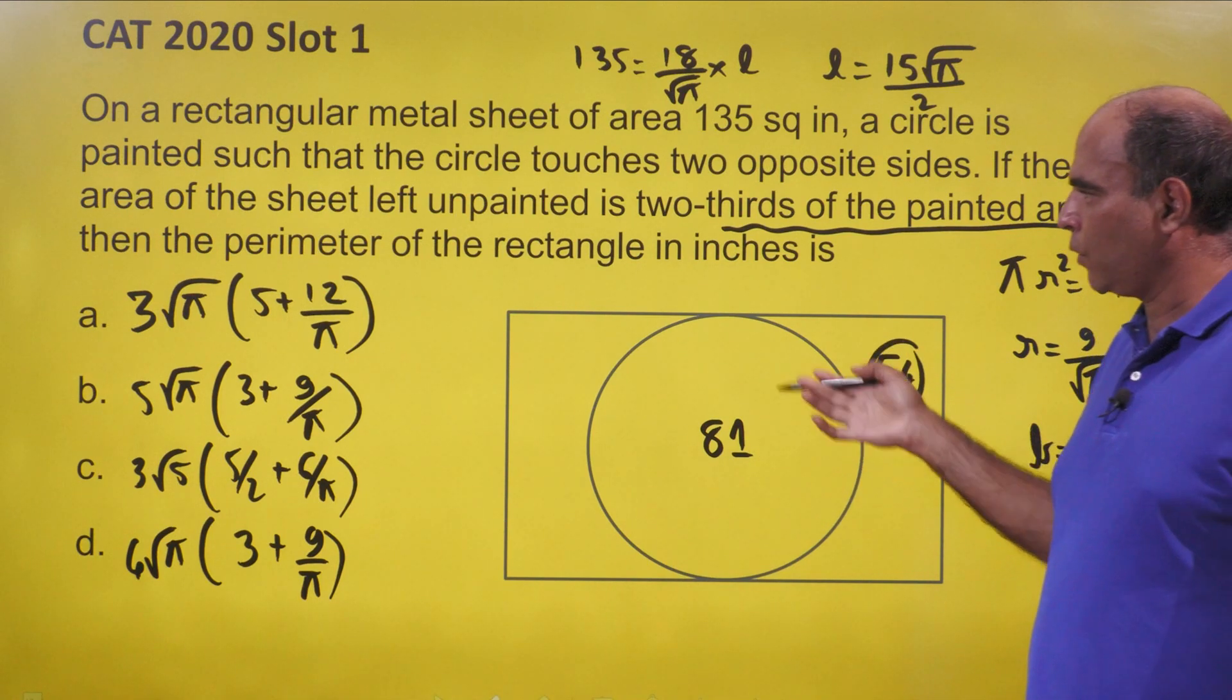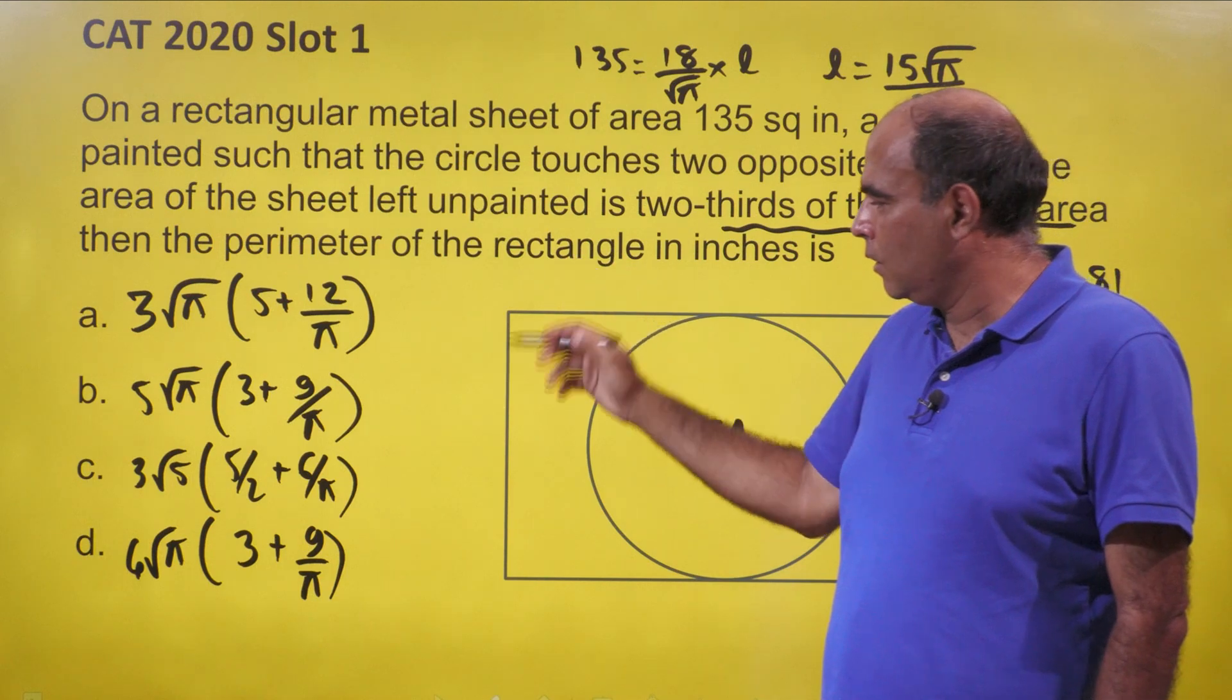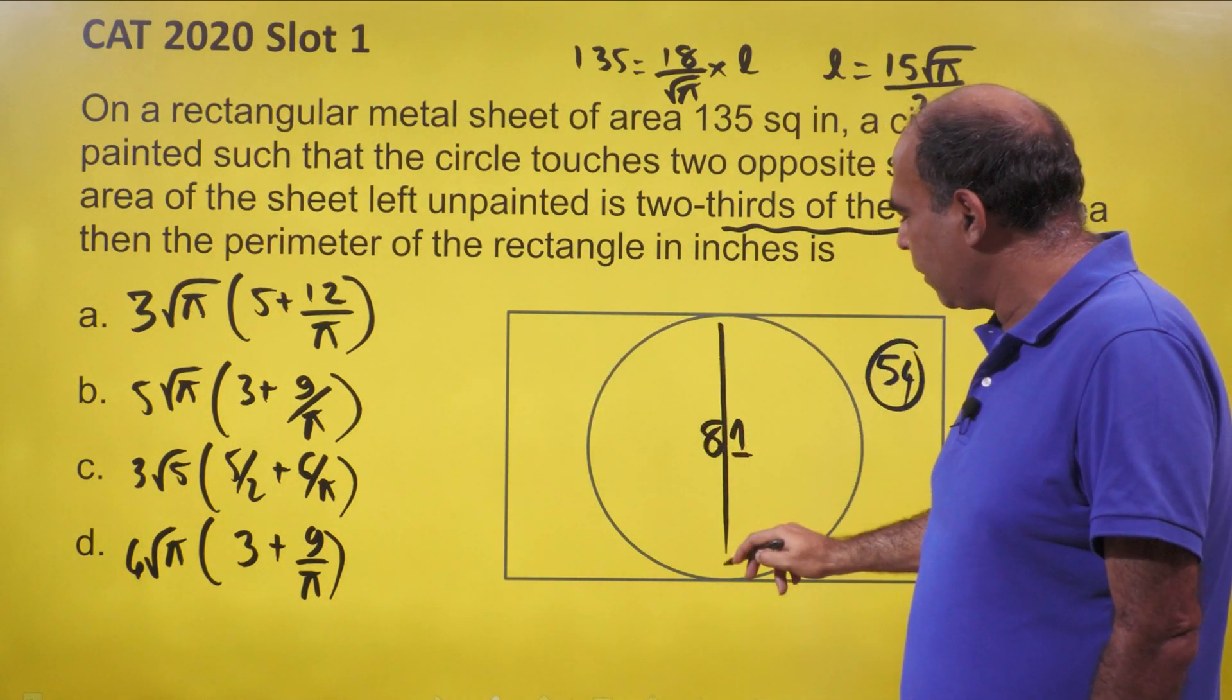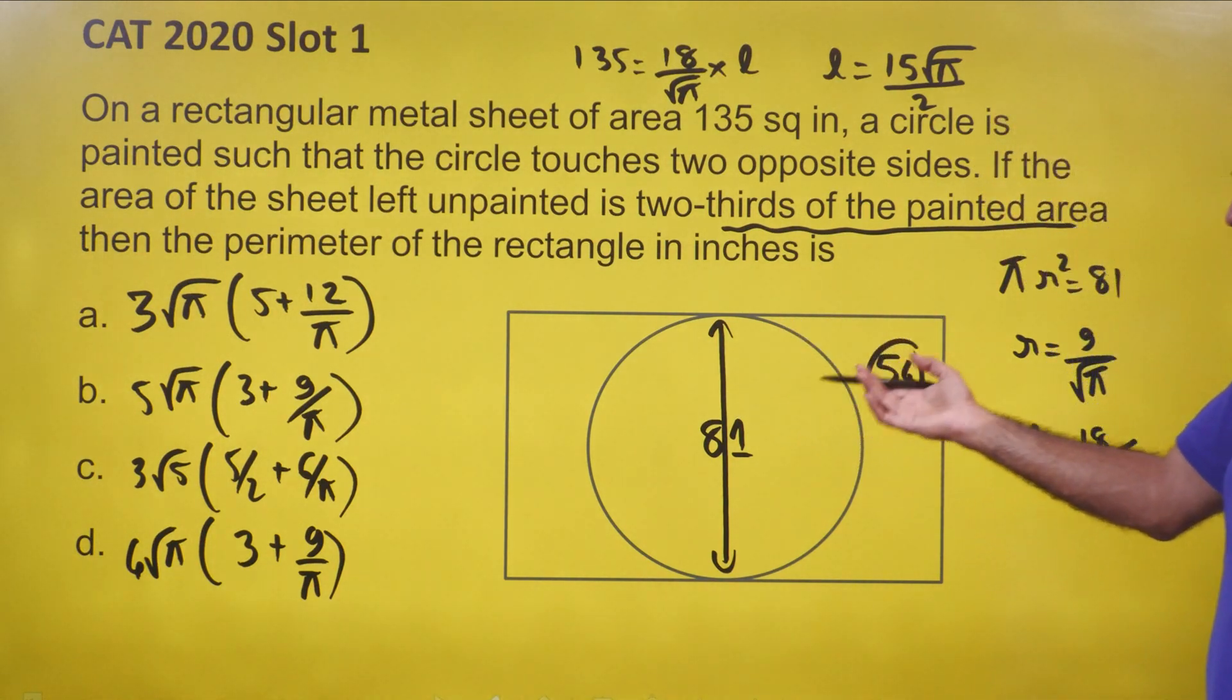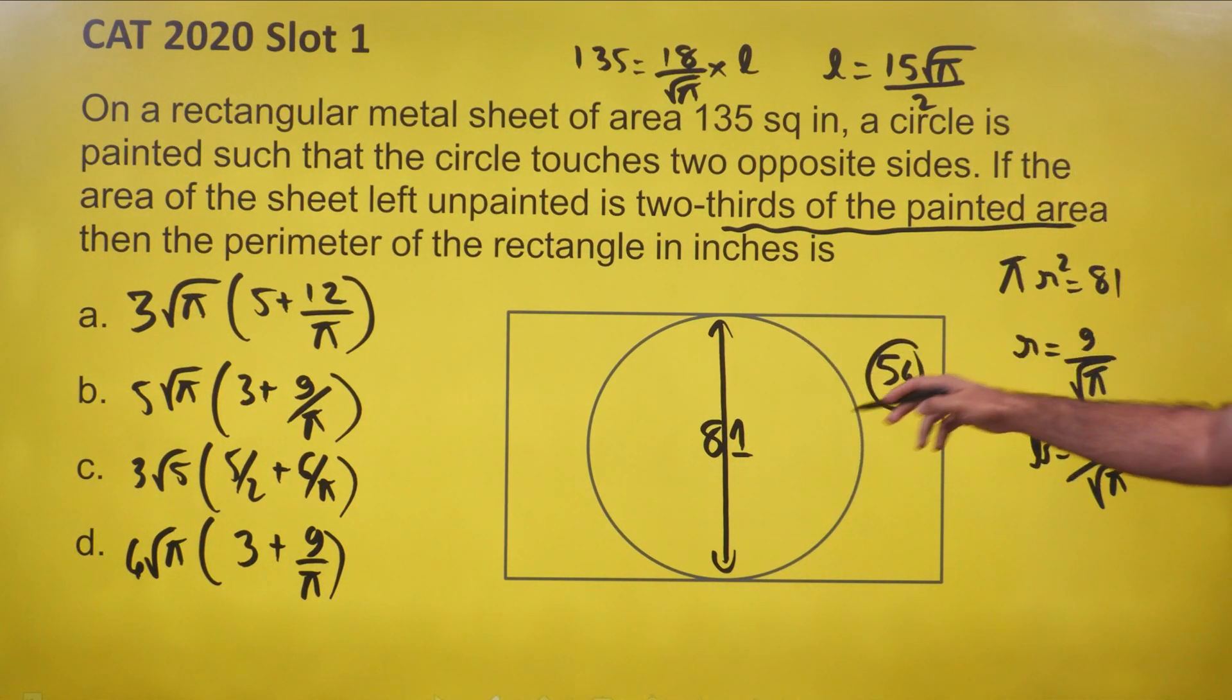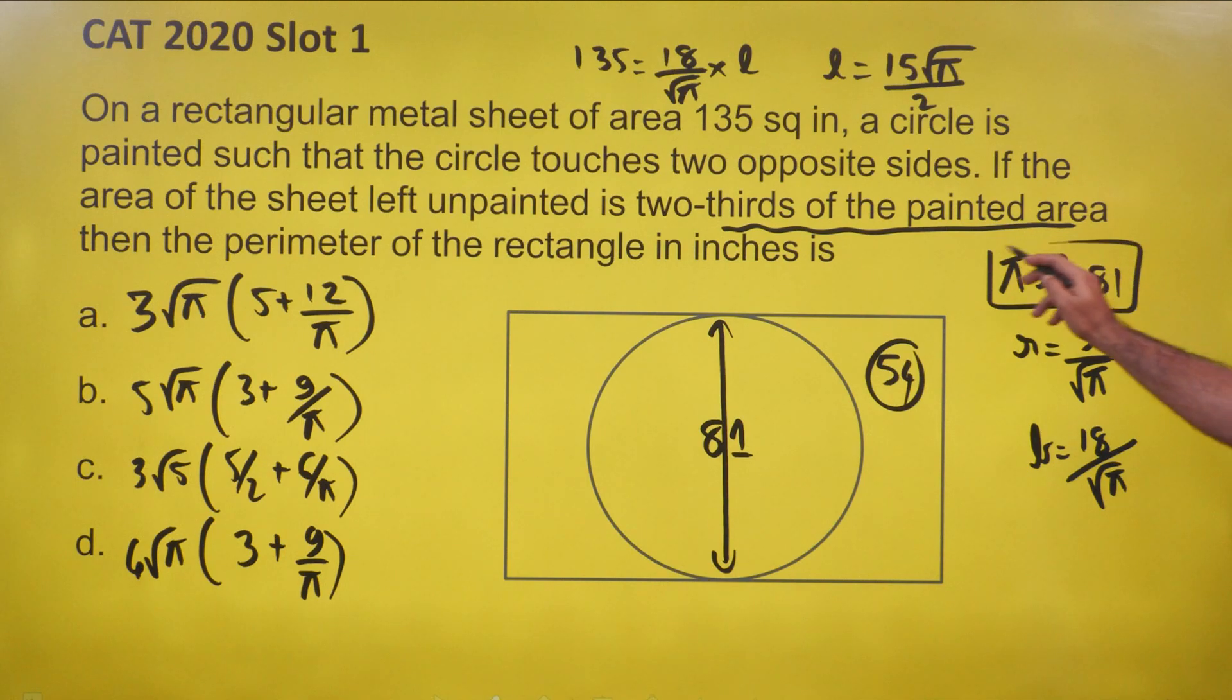So once I have this, the question being asked is perimeter of the rectangle. For perimeter of the rectangle, I need the diameter of the circle added twice and then the length of the rectangle. First of all, the diameter will come from double the radius. So πr² is 81, so r is 9 by root π.